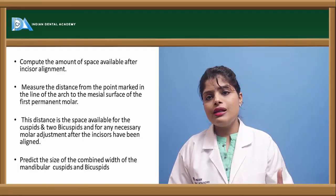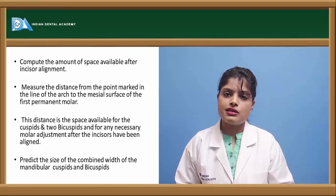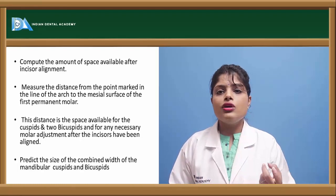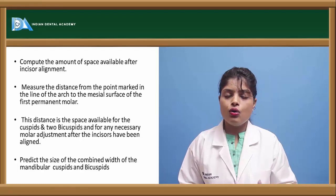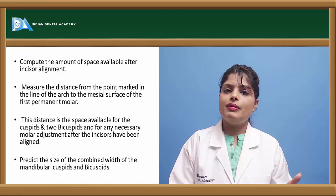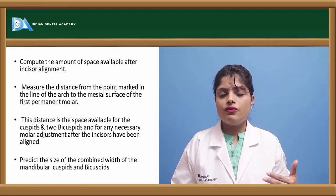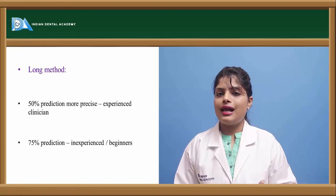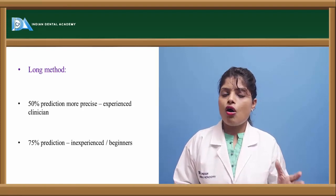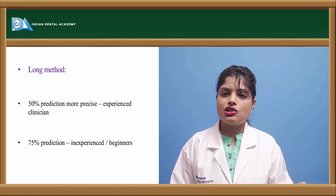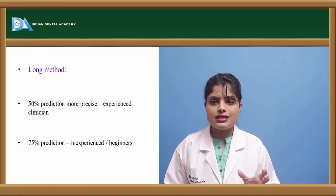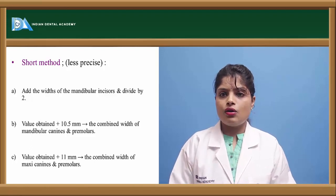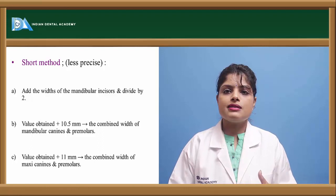We match the total calculated incisor width to the probability chart values for premolars and cuspids to determine how much space will be required for their eruption. If the space available is less than the space required, it will lead to crowding. This allows us to predict whether there will be crowding or spacing and plan preventive and interceptive orthodontic procedures. In this longer method, 50% predictability is attributed to experienced clinicians and 75% predictability to inexperienced or beginner clinicians.